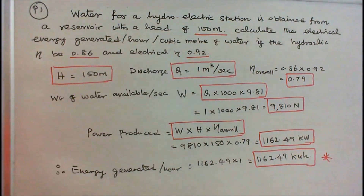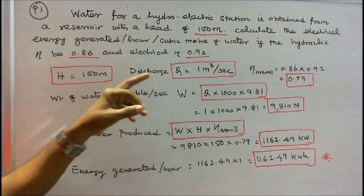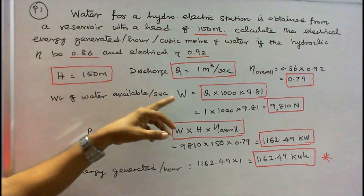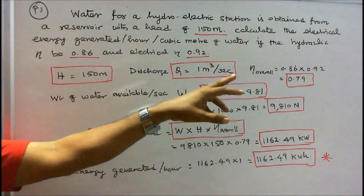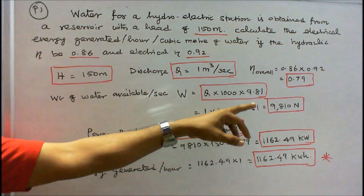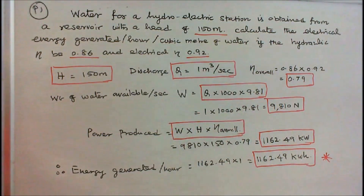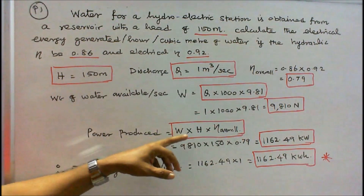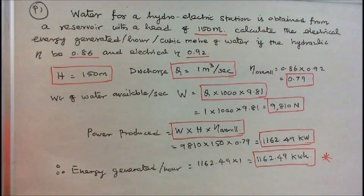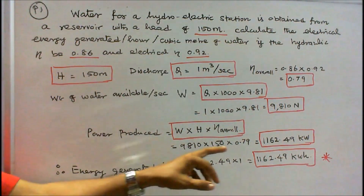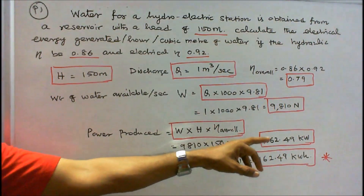H is given as 150 meters. Discharge Q is given as 1 cubic meter per second. Weight of water available per second: W = Q × 1000 × 9.81 Newtons. So W = 1 × 1000 × 9.81 = 9810 Newtons. Power produced = W × H × overall efficiency = 9810 × 150 × 0.79 = 1162.49 kilowatts.